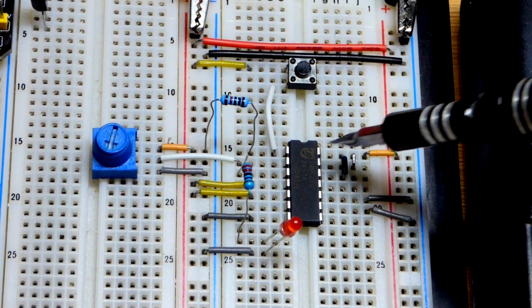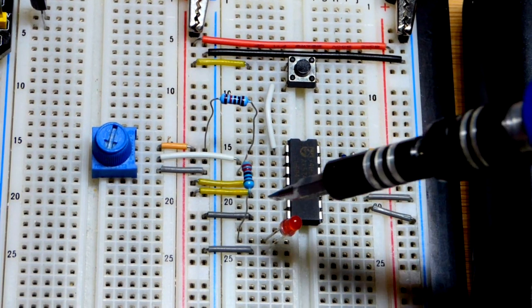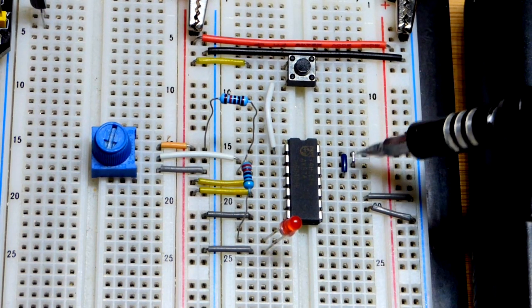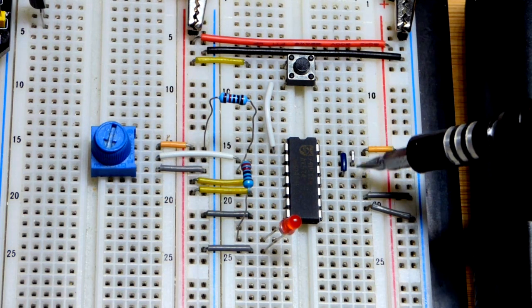And so here is our circuit on the board. We got pin 14 to the positive supply and pin 7 down to the negative supply. You can see a little jumper there and then a little longer jumper there.